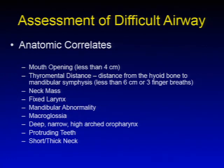Starting with assessment of the difficult airway, there are several anatomic correlates for identifying a difficult airway: mouth opening less than four centimeters, thyromental distance less than six centimeters or three finger breadths, neck mass, fixed larynx, mandibular abnormality, macroglossia, deep or narrow or high arched oropharynx, protruding teeth, or a short thick neck.